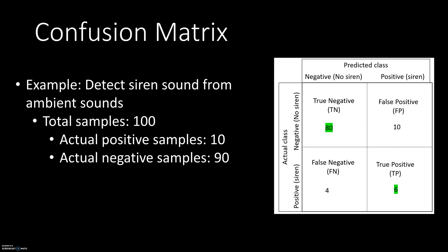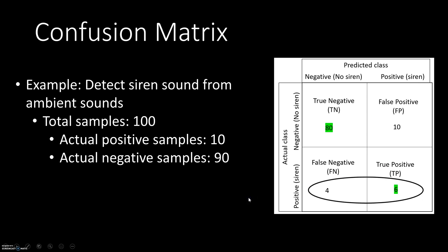Let's go into more detail with an example. Going back to our siren sound detection scenario, let's say we have a total of 100 samples. Out of those, 10 samples belong to the positive class and 90 samples belong to the negative class — this is the actual label. After the model is trained and makes predictions, the confusion matrix shows the following: out of the 10 actual positive samples, the model correctly predicts 6 as positive and incorrectly predicts 4 as negative. Out of the 90 negative samples, it correctly predicts 80 as negative and incorrectly predicts 10 as positive.